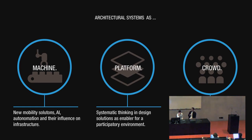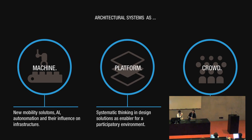This slide comes from a book by Andrew McAfee. We always call our studio not an architectural studio but a studio for architectural systems, and we would like to see architecture as a machine, as a platform, and as a crowd. The lecture gives an overview of past and current streams of architecture and ties our studio works into the larger context.